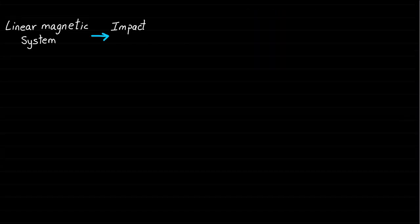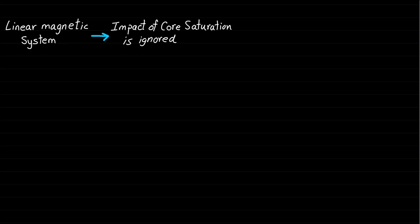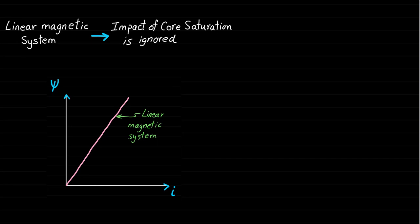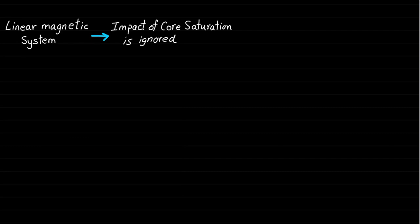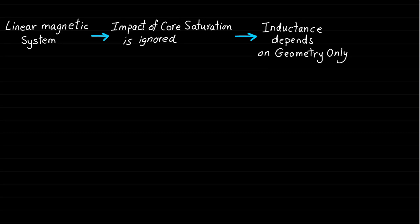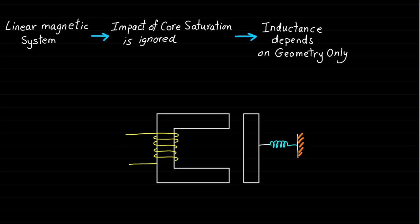A linear magnetic system means that the impact of magnetic core saturation is ignored, and therefore the psi–I characteristic is a simple linear slope. If the magnetic core saturation impact is ignored, the inductance of the magnetic circuit will depend on the geometry only. That means, for a designed magnetic circuit such as the one shown, the only factor that changes the geometry and therefore the inductance is the air gap length or the position x. That is why inductance is represented by L(x).